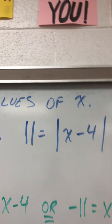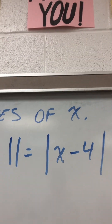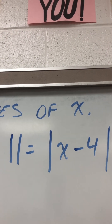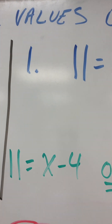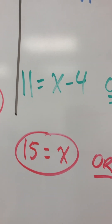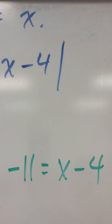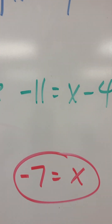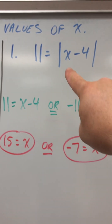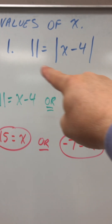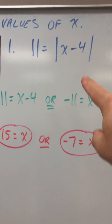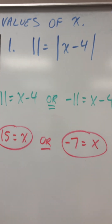Here's another example: 11 equals absolute value of x minus 4. That means we're going to take positive 11 and negative 11. So we do 11 equals x minus 4, add 4 to both sides, x equals 15. Or negative 11 equals x minus 4, add 4 to both sides, you get negative 7. Because if we put in 15 for x, what's 15 minus 4? 15 minus 4 is 11. What's negative 7 minus 4? Negative 7 minus 4 is negative 11, and the absolute value of negative 11 is positive 11.